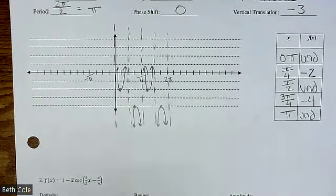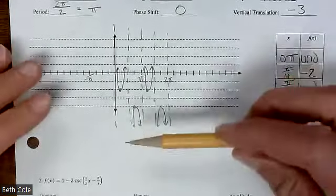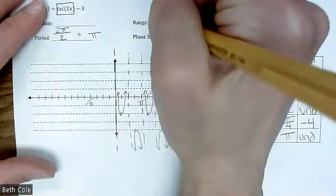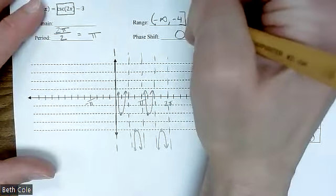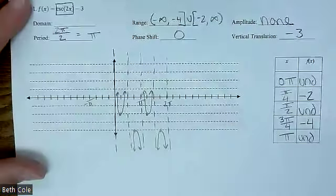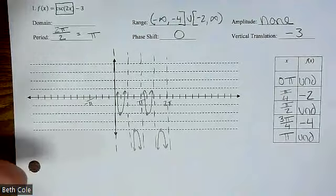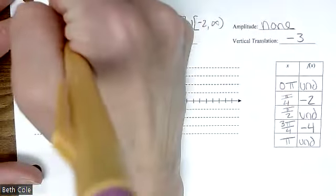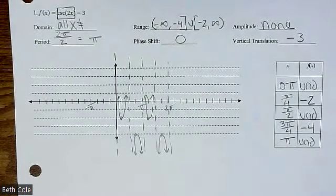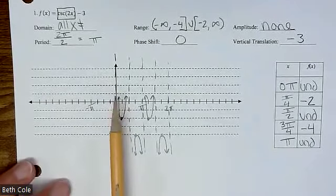Don't forget to go back and answer your domain and range. I'll do the range first because I think it's easier — a little bit more intuitive. You can kind of just sweep downwards to upwards. It'll be negative infinity to negative four, bracket, union, negative two to infinity. And then for the domain, you want everything except where the asymptotes are, so it's all x not equal to. This one's zero, which is always nice.